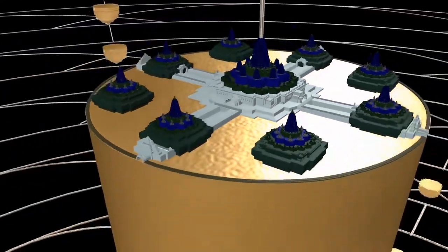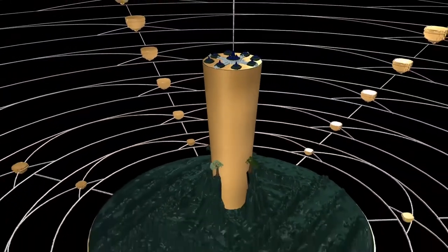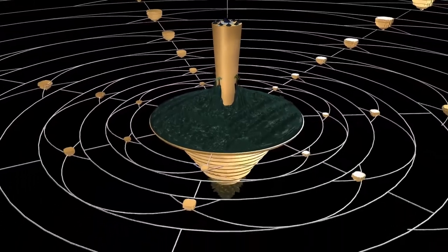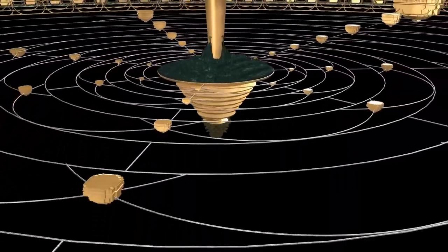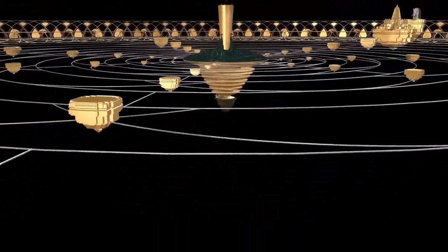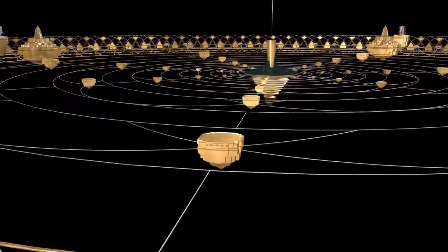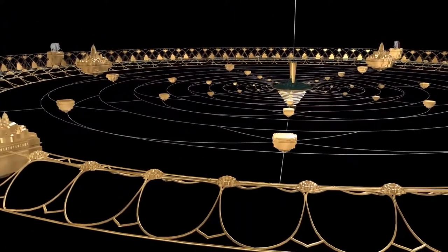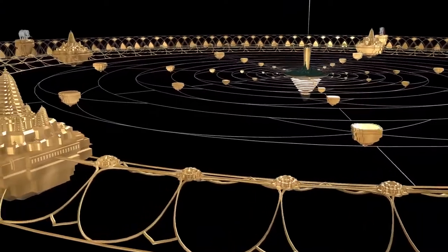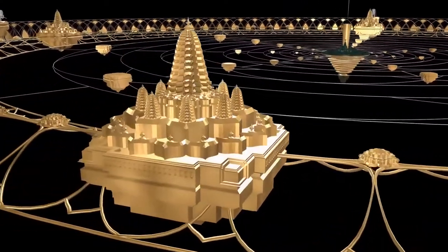Moving out, we can see the broader Bhumandala, seven concentric islands and oceans surrounding them. The seventh of these islands is Pushkaradweep. On that island is Manasotara mountain, and on the mountain there are various cities of demigods such as Indra.